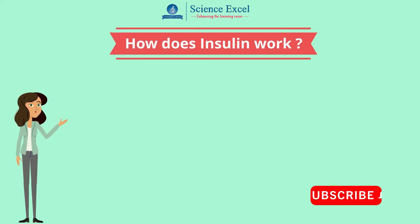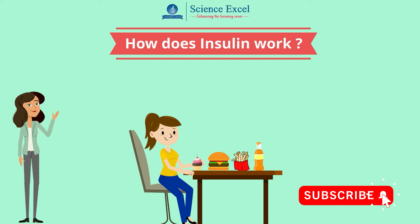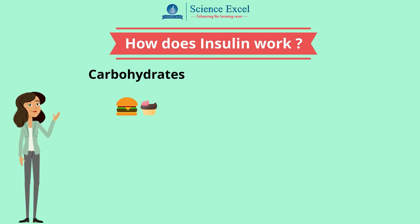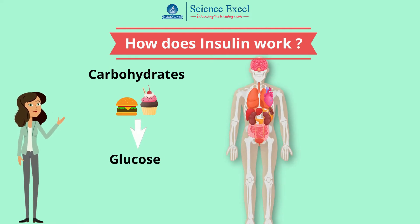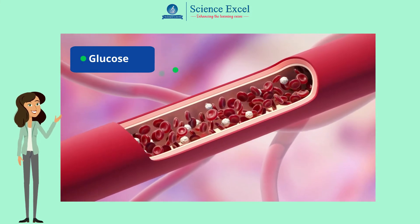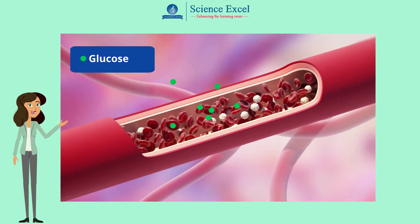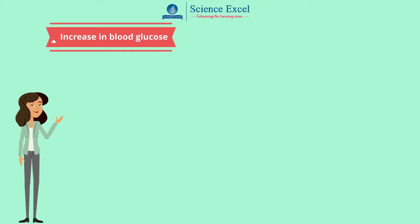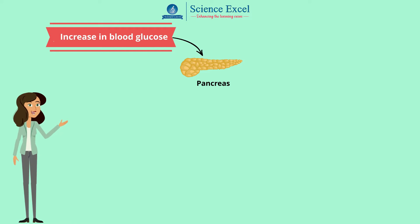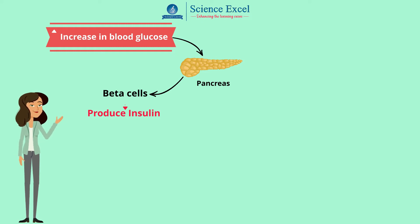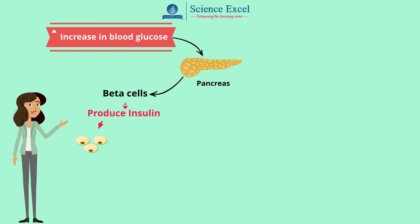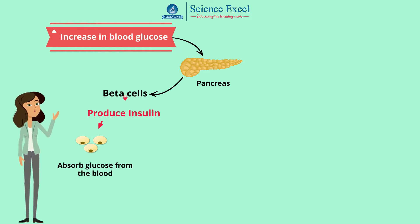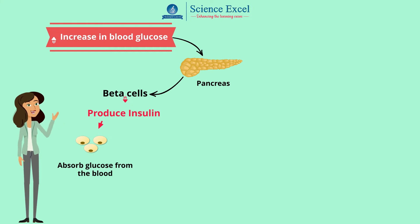Now let us understand how insulin works. When we eat a meal which has a lot of carbohydrates in it, these carbohydrates will be broken down into glucose in the intestine. This glucose is then absorbed into the bloodstream, which causes the concentration of glucose in the blood to increase. This increase in the blood glucose signals the pancreas, which have a type of cells called beta cells, to produce the hormone insulin. This insulin enables the cells throughout our body to absorb glucose from our bloodstream and use it for energy. As the glucose moves into our cells, our blood glucose levels decrease.